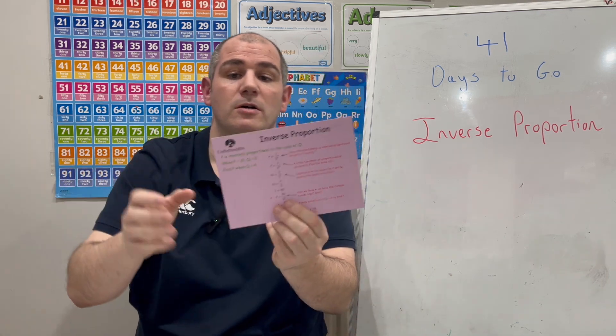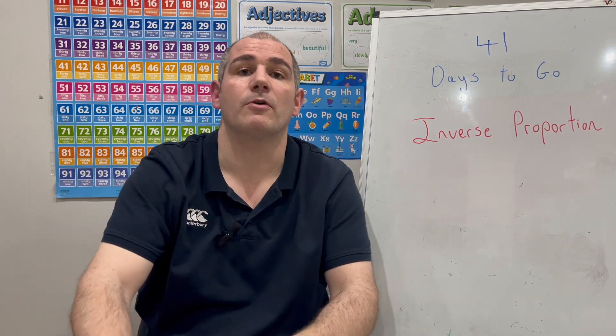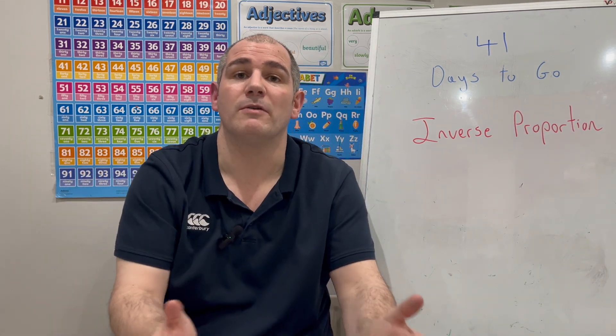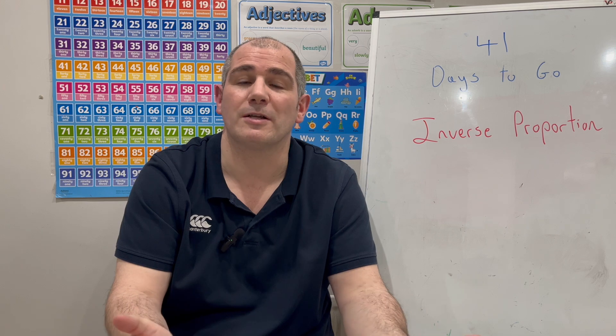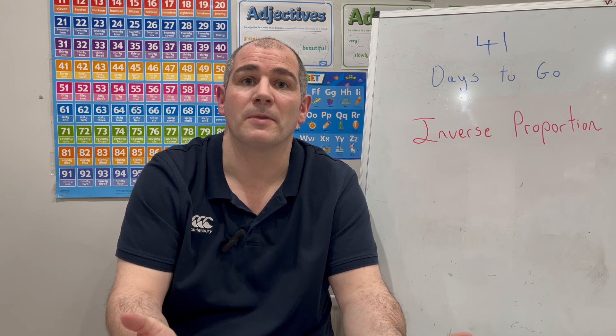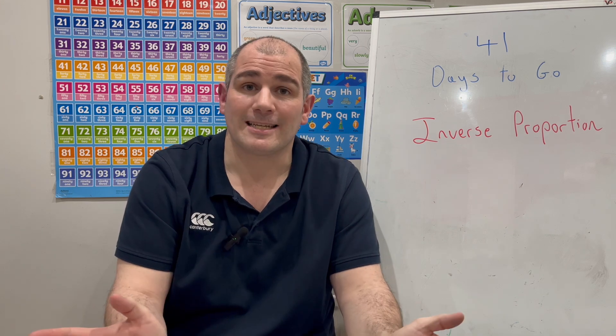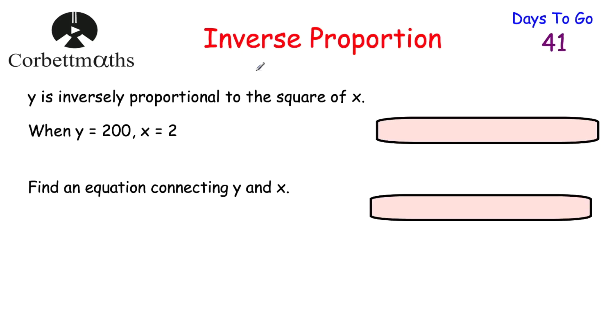If you have the code managed revision card, card number 63 is quite useful — it's on inverse proportions. Let's get started. Today we're looking at inverse proportions: as one value increases, the other decreases.